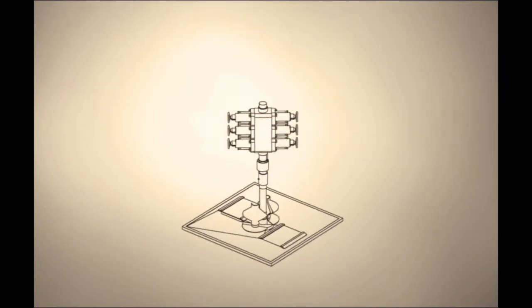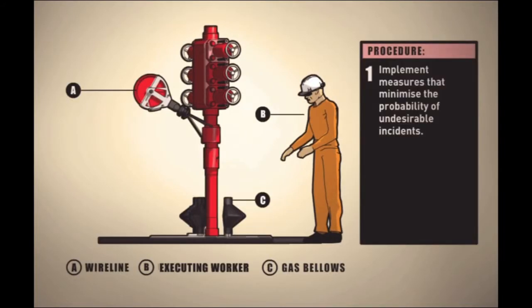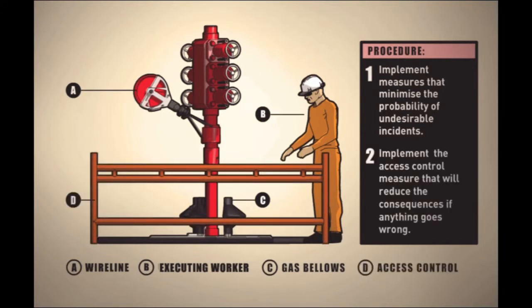You should therefore implement measures that minimize the likelihood of undesirable incidents occurring before you establish access control. You then implement the access control measure that will reduce the consequences if anything goes wrong.